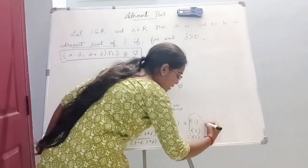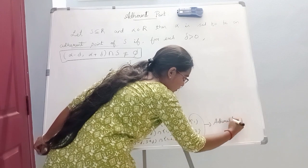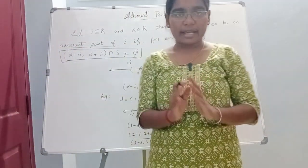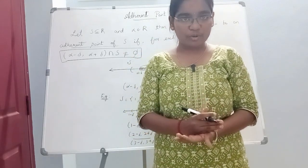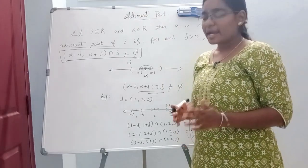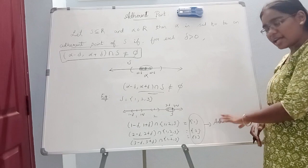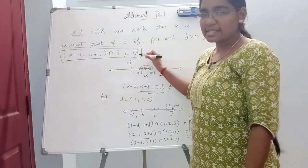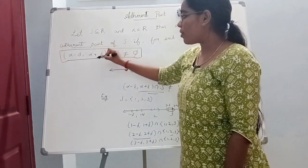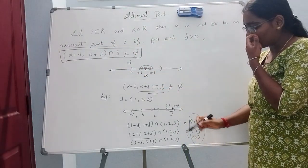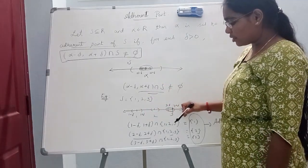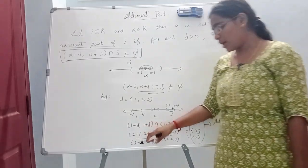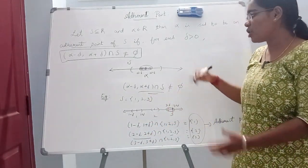So in this case, what points are there? Adherent points. First, we will find the neighborhood, then we will intersect the set. When we intersect with a common value — a non-empty set — we will say that the point is an adherent point. So 1, 2, and 3 are all adherent points when the intersection gives a non-empty value.